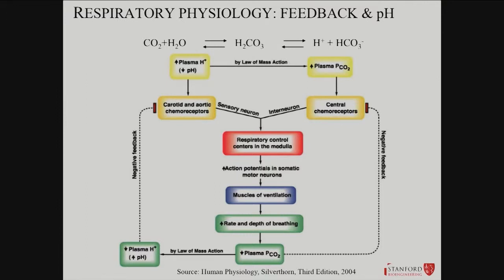You can have a respiratory compensation to a metabolic acidosis, but it also goes the other way. If someone has a primary respiratory problem and acid buildup, metabolic compensation can help remove the extra acid. It can go to respiratory acidosis or alkalosis — it works in both directions.